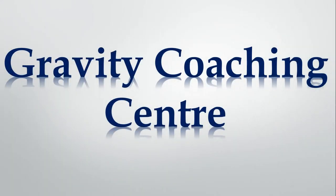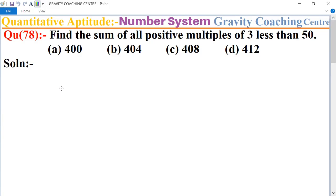Welcome to our channel Gravity Coaching Centre, the aptitude chapter Number System, question number 78. Find the sum of all positive multiples of 3 less than 50. So first we write all the positive multiples of 3 less than 50.